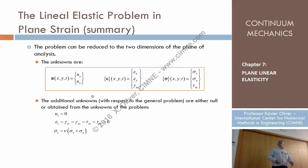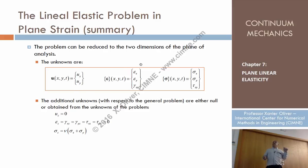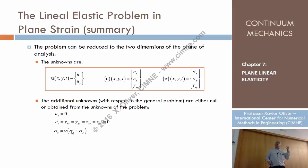In summary, in plane strain we have 2 non-zero displacements (displacement Z equals zero), 3 non-zero strains — epsilon X, epsilon Y, and gamma XY — and 3 relevant stresses, although there is another one, sigma Z, which is not an unknown because it can be written in terms of sigma X and sigma Y. That is the situation.